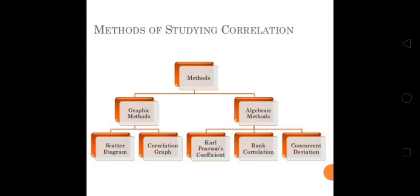The methods of studying correlation are broadly two: graphic and algebraic. In graphic there are two, and in algebraic there are three. But in the graphic method we have to discuss only one, that is scatter diagram. Correlation graph we have not to discuss. And in algebraic methods we have to discuss only two.